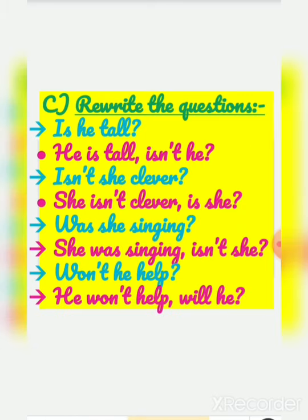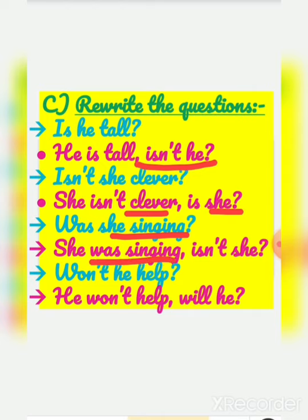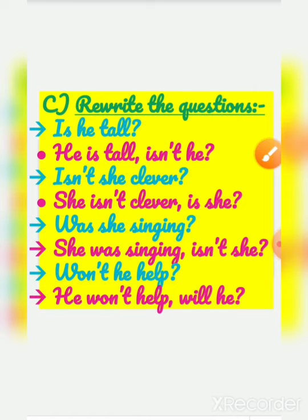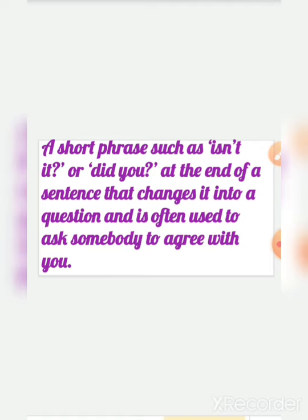Now rewrite the questions. 'Is he tall?' — He is tall. Isn't he? 'Isn't she clever?' — She isn't clever. Is she? First, you make a simple sentence and at the end you change it into a question. 'Was she singing?' — She was singing. Wasn't she? 'Won't he help?' — He won't help. Will he? So children, in question tag, with a short phrase like 'isn't it' or 'did you' at the end of a sentence, that changes it into a question and is often used to ask somebody to agree with you.